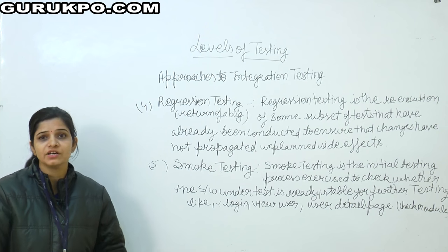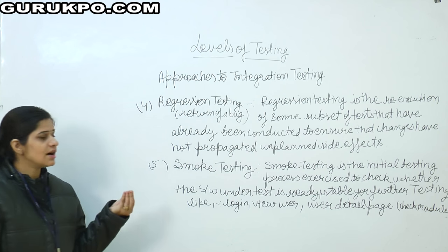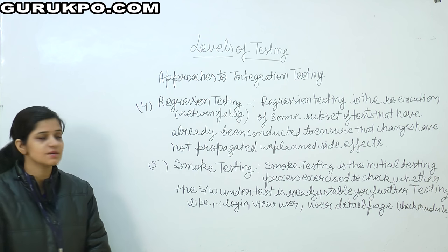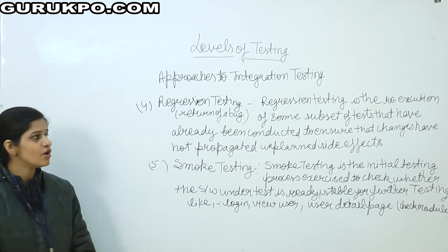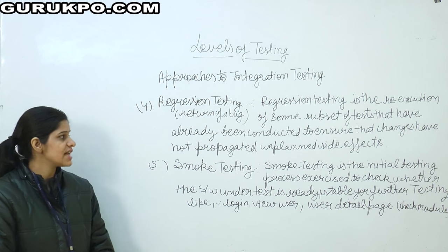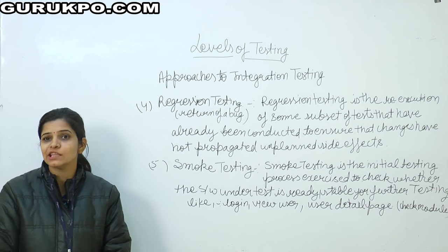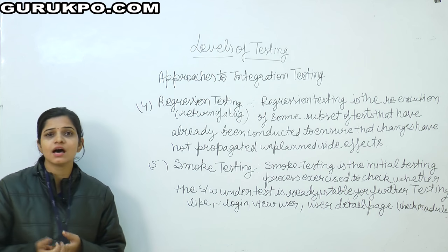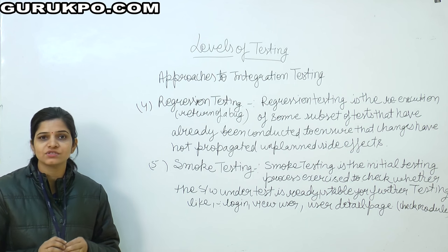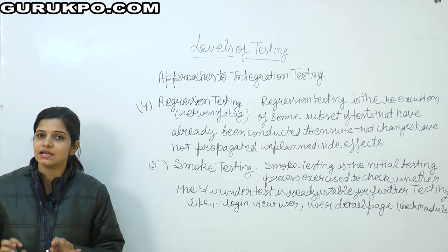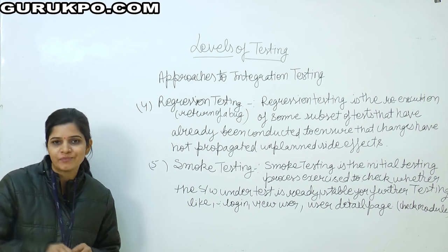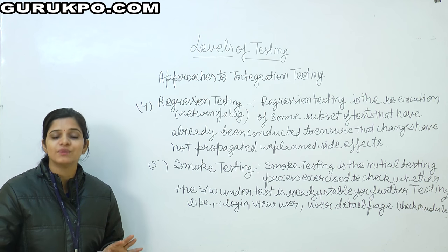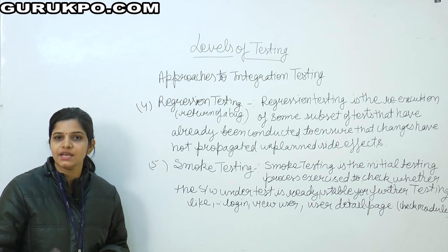Regression means return of a bug — bug means error. What happens is that one bug, one error, gets fixed. Regression testing is a re-execution of some subset of tests that have already been constructed, to ensure that changes have not propagated unplanned side effects. Unplanned means we had not planned for these side effects. For example, suppose we are installing an air conditioner at home — all testing has been done, every part tested separately, combined, and tested again. After fitting it at home, testing happens again to check if it works properly or not.